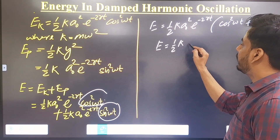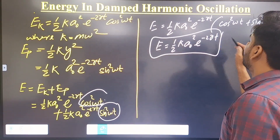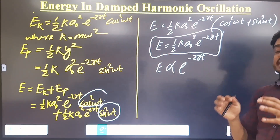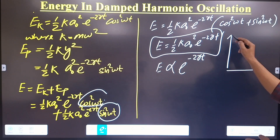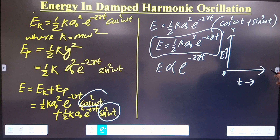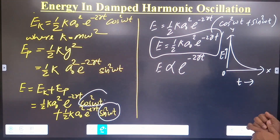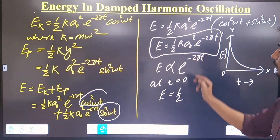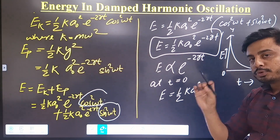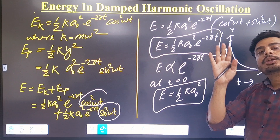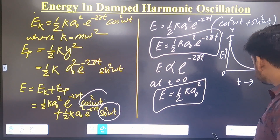So the total energy E equals half k a-naught squared e to the power minus 2rt. We can see that energy is proportional to e to the power minus 2rt, so it is exponentially decreasing with time. If we plot a graph with energy along the y-axis and time along the x-axis, there is an exponential decrease of energy in damped vibration due to the damping force. At t equal to 0, the energy is half k a-naught squared, and as time increases the energy gradually decreases.